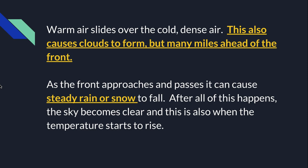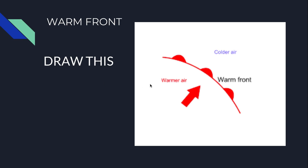As the front approaches and passes, it can cause steady rain or snow to fall. After that, the sky becomes clear and the temperature will rise. On a weather map, a warm front is always going to be red with little semi-circles — they kind of look like little suns about to rise and warm up your day. As the warm front moves through, the temperature will get warmer and the clouds are way ahead.